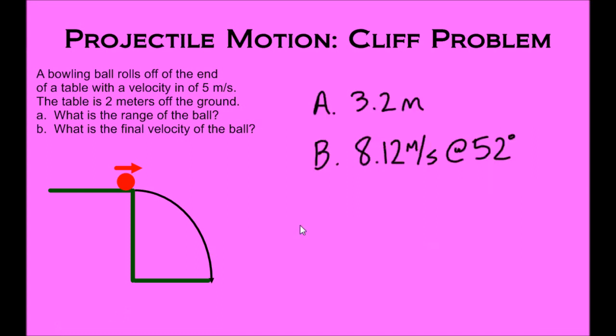Here's our final answer: a bowling ball rolls off the end of a table with a velocity of 5 meters per second, and the table is 2 meters off the ground. We found the time first — 0.64 seconds — which helped us quite a bit. Then we found the range of the ball, which was 3.2 meters. And the final velocity of the ball was 8.12 meters per second at 52 degrees.